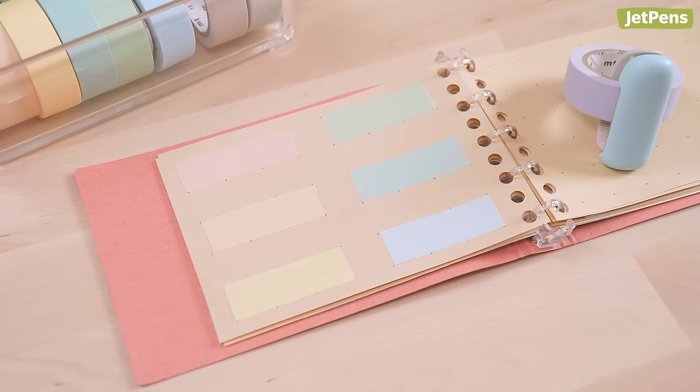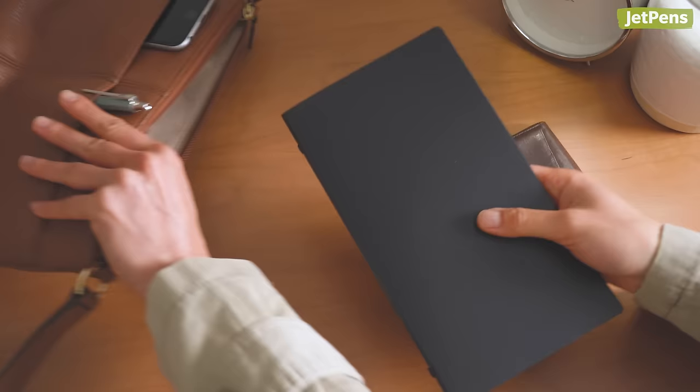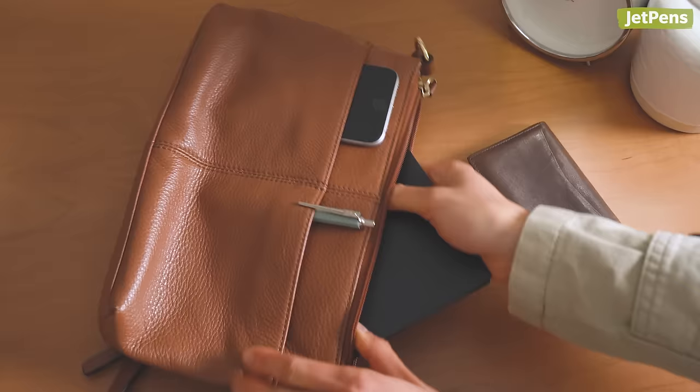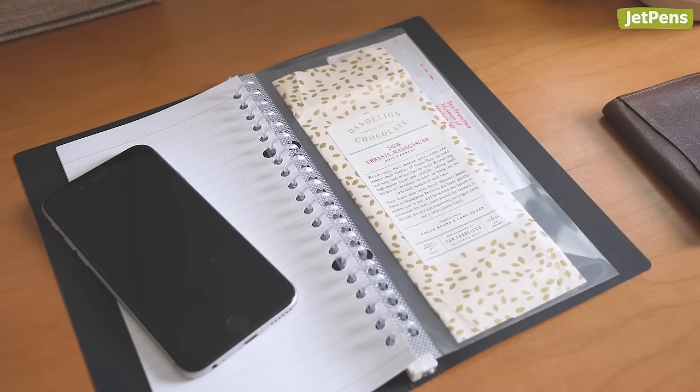For travelers, perfectly sized for the frequent traveler, the Maruman Puo is slimmer than the typical A5 binder. It fits neatly in purses and bags without weighing you down. This binder comes with 10 sheets of lined paper and a clear pocket for storing tickets, receipts, and other scraps.